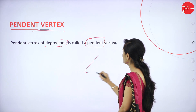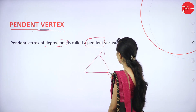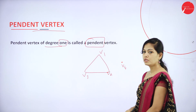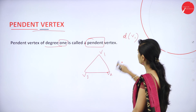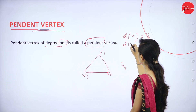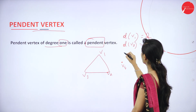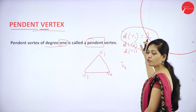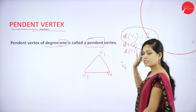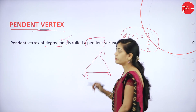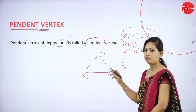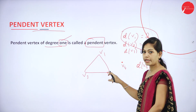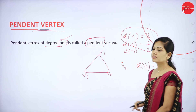For example, consider a graph with vertices V1, V2, V3, and V4. D(V1) is connected to V2 and another vertex, giving degree 2. V2 also has degree 2. Since the degree of V2 is 2, it is not a pendant vertex. However, V4 has D(V4) equals 1 — it is not connected to any other edges. So V4 is called a pendant vertex.